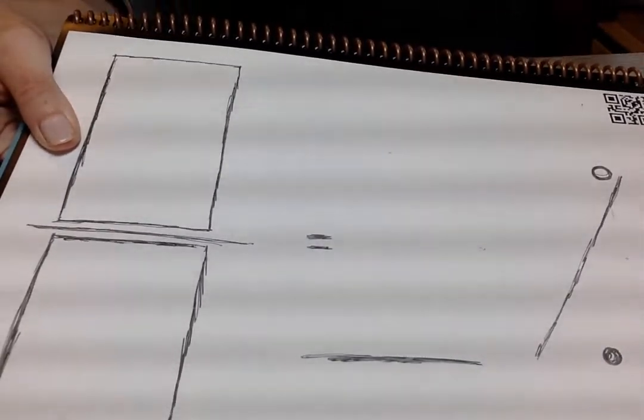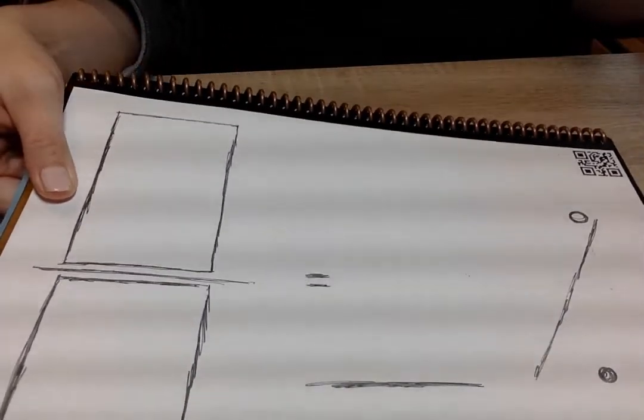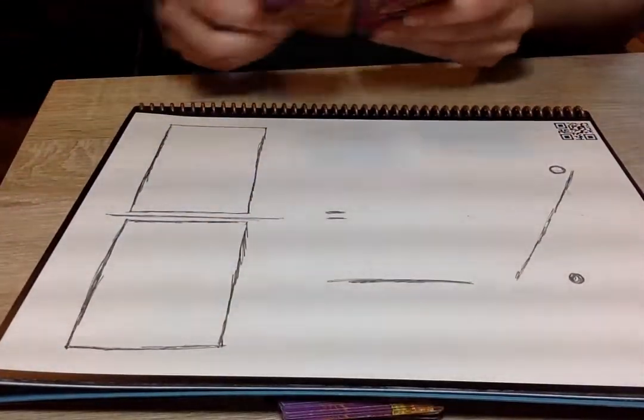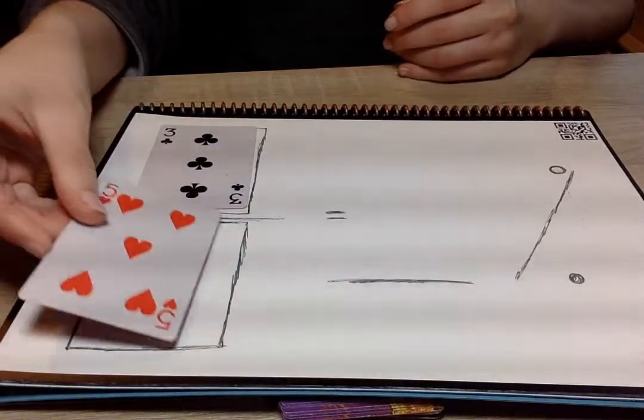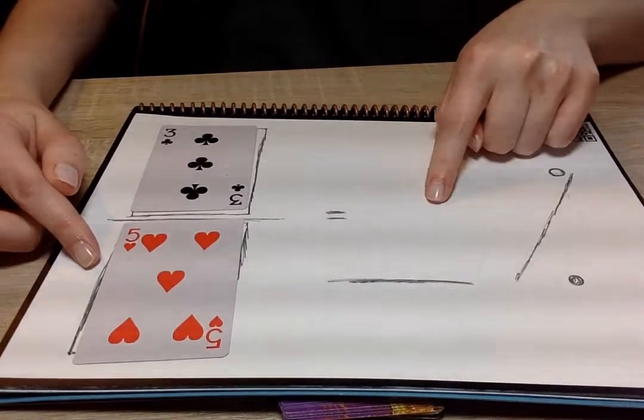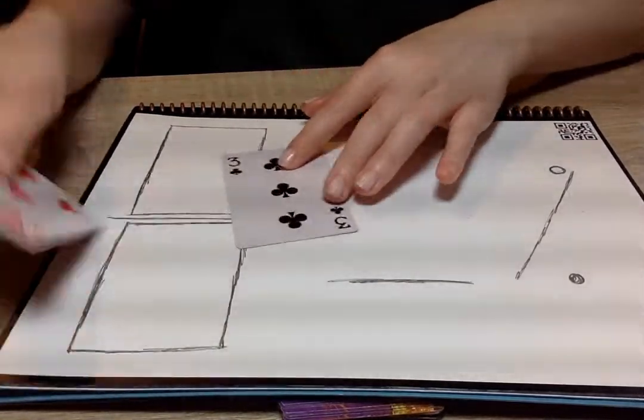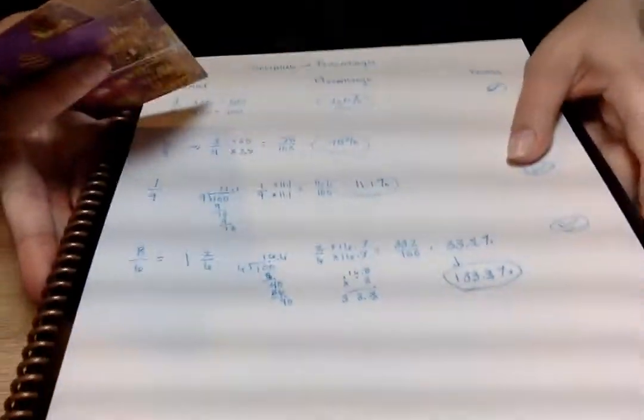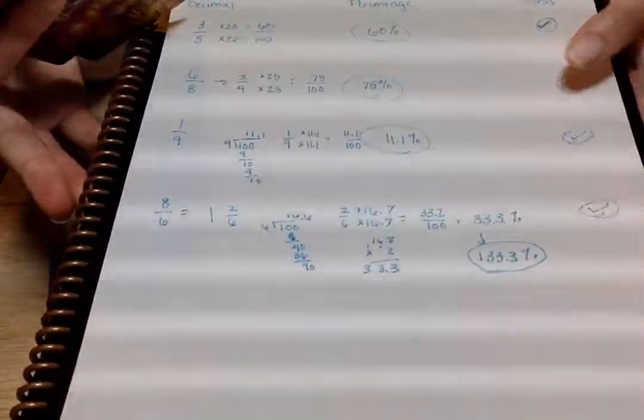So let's say that student A places a 3 here, and student B places a 5 here. Their fraction is 3 fifths, and they're going to work to find this percentage. They're going to write all of this down in their math notebooks, and they're going to show me their proof, and that way they can also jot their thoughts down as they go.